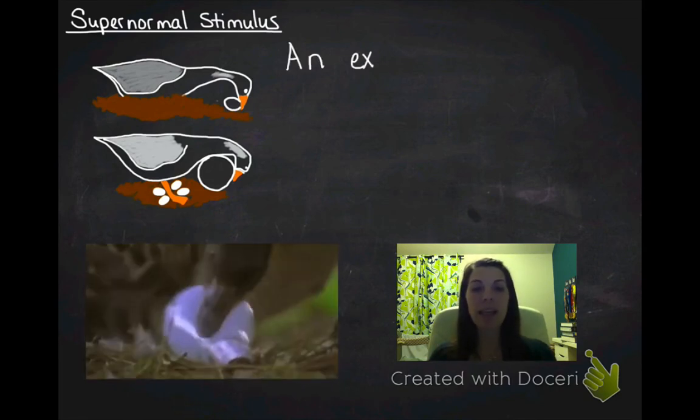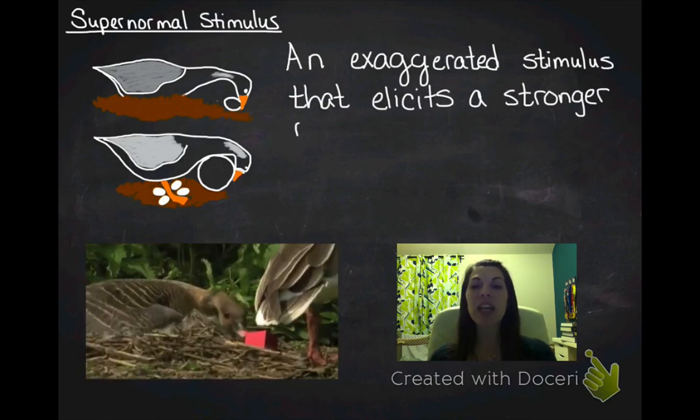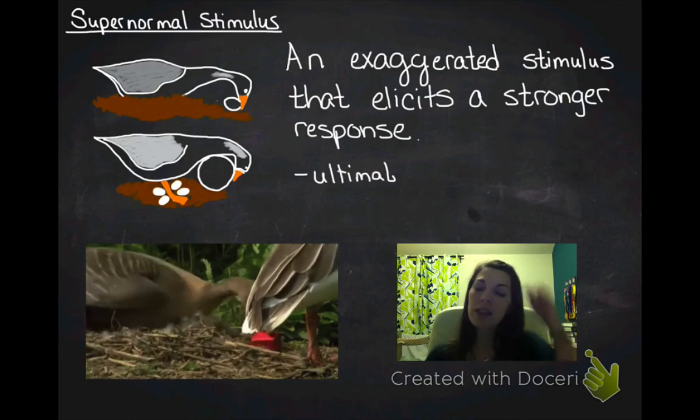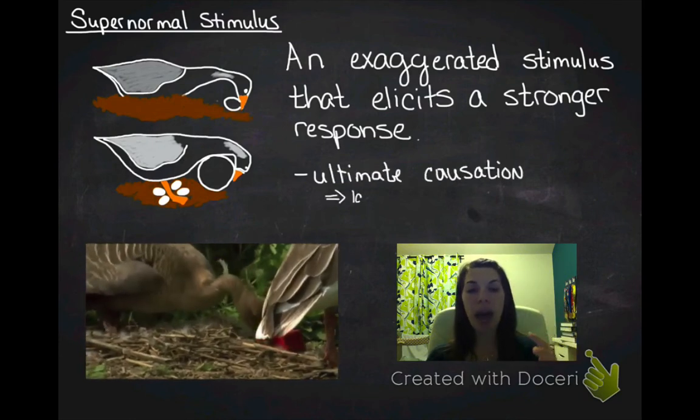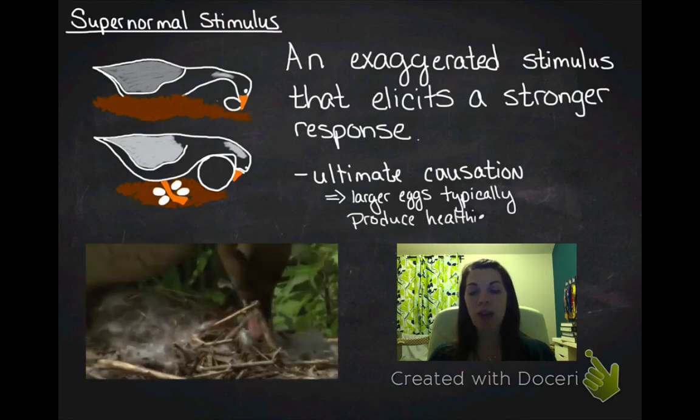What's happening is you have an exaggerated stimulus, a giant egg, that elicits a stronger response. It's going to respond to that giant egg rather than its own egg.